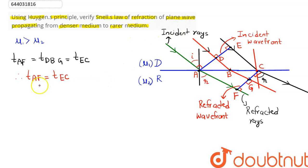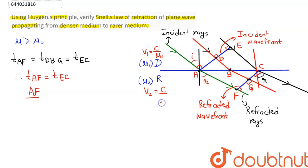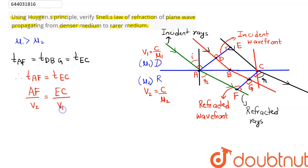As we know, time equals distance divided by velocity. In the first case the distance is AF and the velocity in the first medium is v1; in the second case the distance is EC and the velocity is v2. We can write v1 as c divided by mu1, and v2 as c divided by mu2.